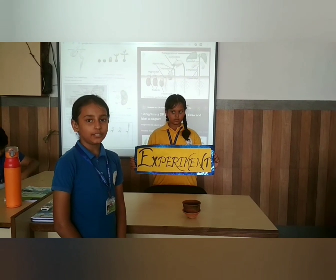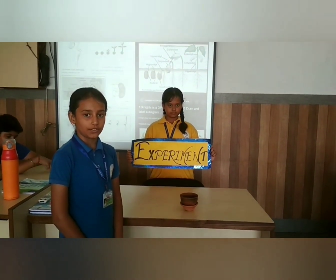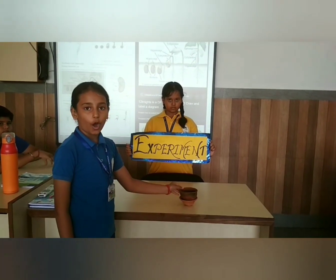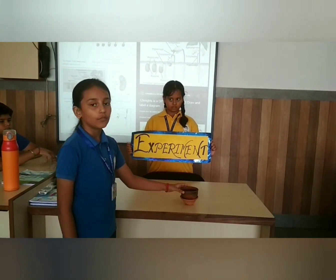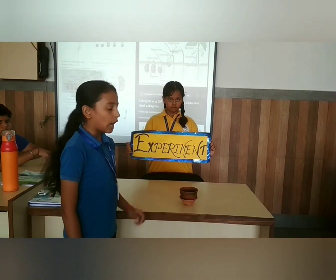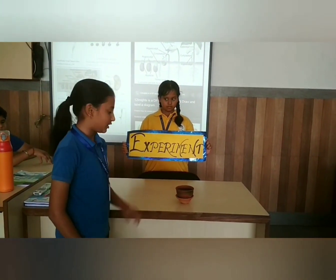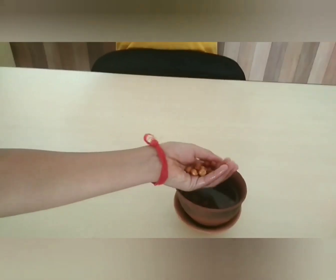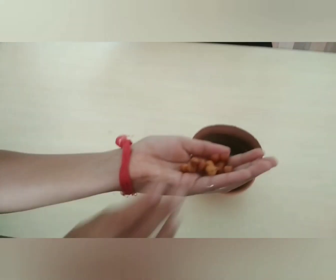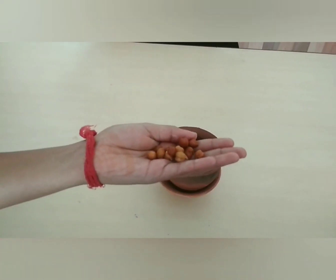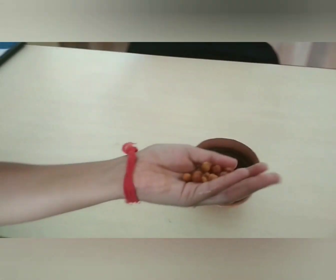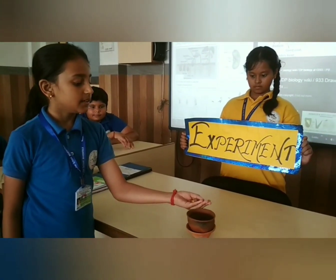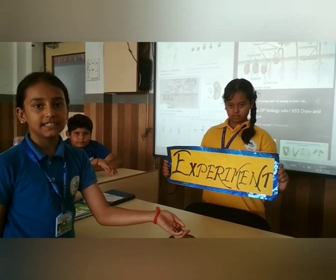Today is day 2 of the seed germination process. Yesterday we put all the seeds in this pot, added water, and left it overnight. Now we are going to see the seed condition. This seed has become bigger in size because it absorbed all the water. Now we are going to leave it for one more day to see the sprouts coming out of the seed.